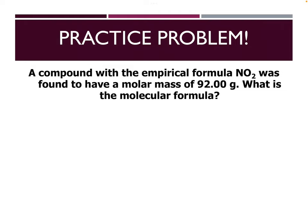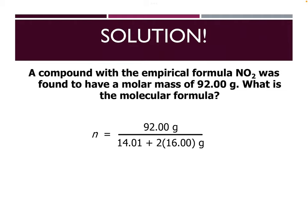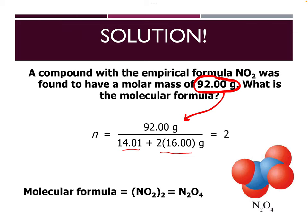Practice problem: a compound with empirical formula NO₂ has a molar mass of 92 g/mol. What is the molecular formula? The molar mass of NO₂ empirical formula is nitrogen plus 2 oxygens equals 46 g/mol. N = 92 divided by 46 = 2. Multiply the empirical formula by 2: 2 nitrogens and 4 oxygens gives N₂O₄ — dinitrogen tetroxide.